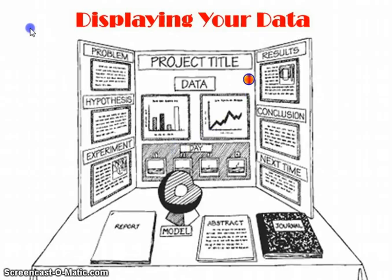Then we slide to the right side of our board to the results. Your results are: what happened? Did you prove which was the best, second best, third, fourth — whatever it was? What does your data show us? That's what goes in there. And that leads to your conclusion, which is: did you prove your hypothesis correct or incorrect? My hypothesis was proven correct, so-and-so was the best. Or, my hypothesis was proven incorrect, and this was the best one.